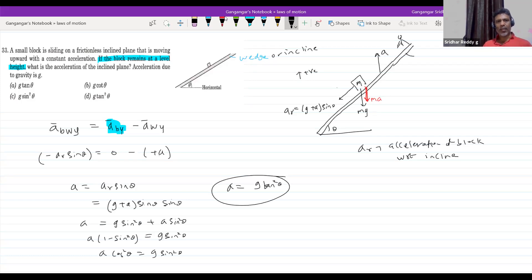If the block remains at a level height, means the acceleration of the block with respect to ground along y-axis must be zero. Though the inclined plane moves, the position of the block should not change, so it should be there only.